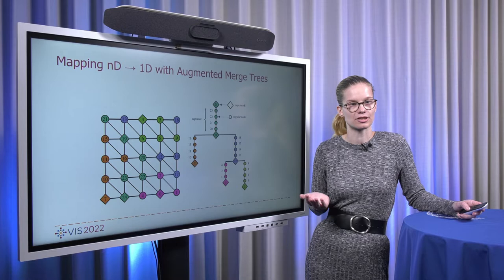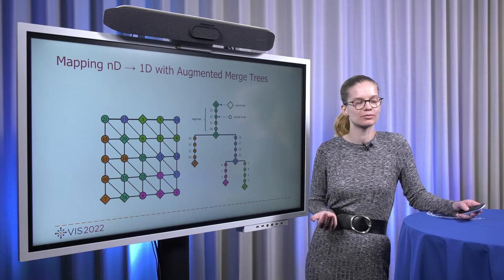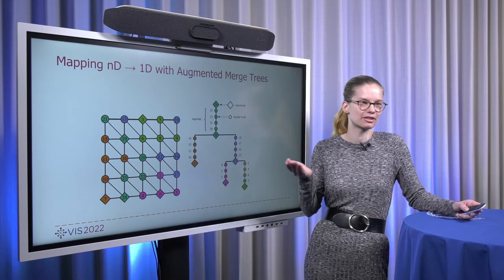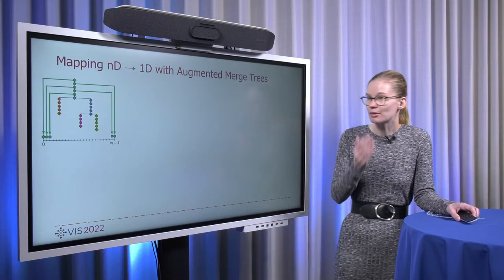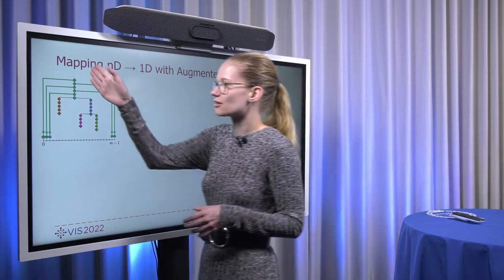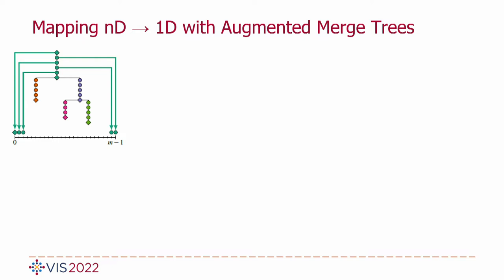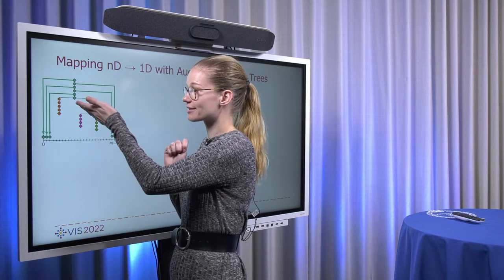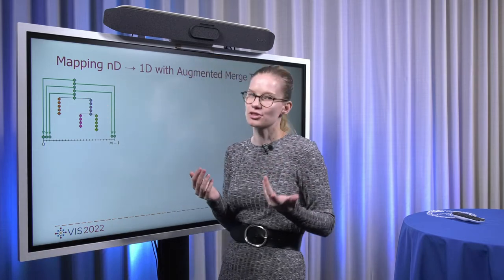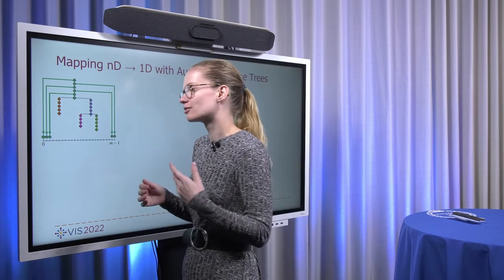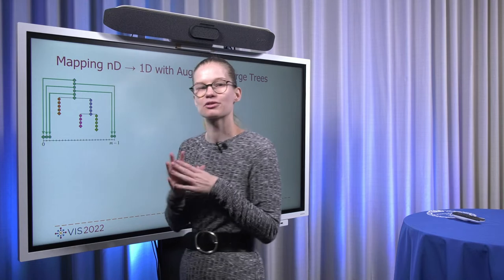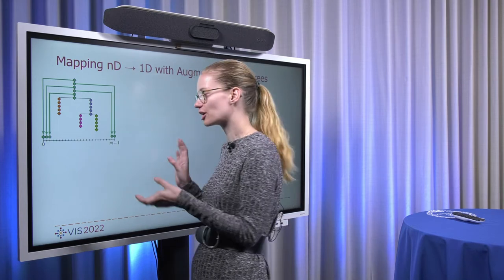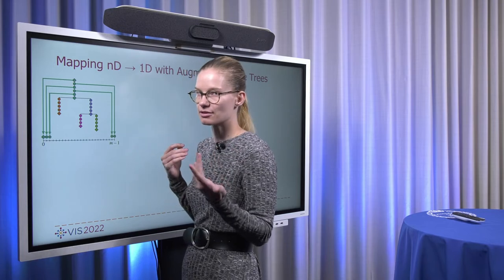And in order to create our 1D representation, we can basically reverse this algorithm to create a 1D representation that again has the exact same merge tree as our scalar field that we had originally. The way we do that is by starting at the root. Each vertex that we encounter along the way, we just sort it towards the left and to the right of our 1D space that we have available. We do that until we reach a saddle point. There we now have to make a decision where we place it. And in order to later traverse its children, we need to make space for those children. And that point also needs to be placed in between them, such that the merging behavior in one dimension is again the same as in the original merge tree.